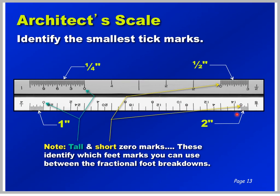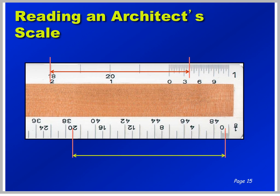You read the full feet from the zero mark going this direction, and you read the portion of a foot between the zero mark and the tick marks. This is very clearly seen on the 1-inch scale. So let's get started reading scales.